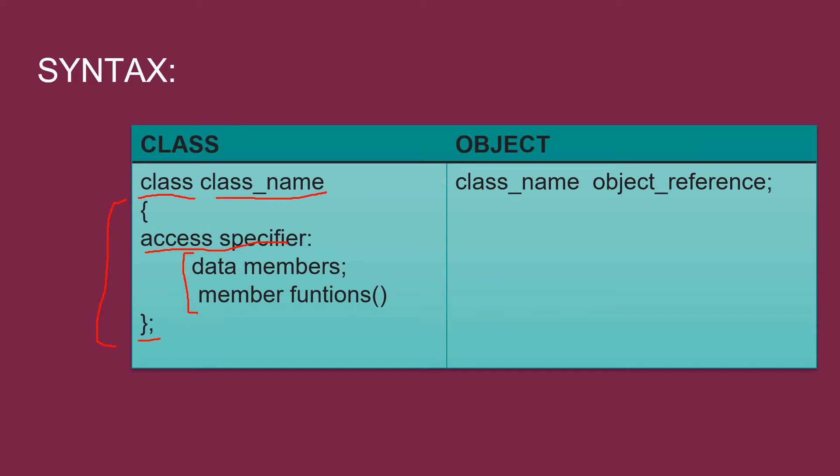Next is the object declaration. For object, we will declare the name of class first followed by the number of objects you want to declare separated by comma and ending with the semicolon.